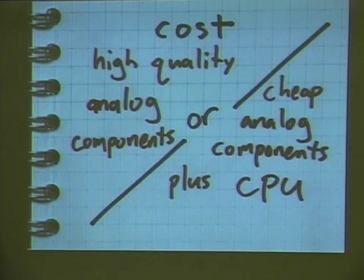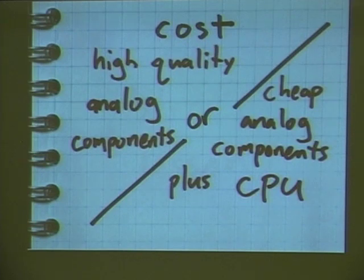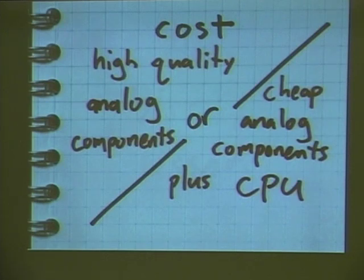Software radios are still not extremely commonplace — they're kind of expensive overall, because you can still build radios for specific technologies more inexpensively than a general-purpose software radio hardware platform. As time progresses, Moore's law will enable software radios to come down in price, consume less power, be physically smaller, and be embedded in more and more devices.